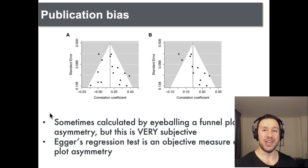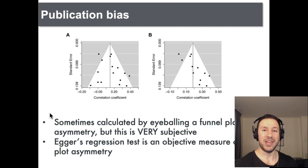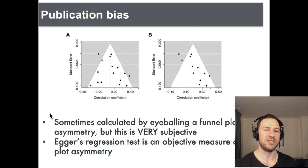On the left we have a funnel plot which typically would be seen as symmetrical, and on the right we would see a funnel plot which is not symmetrical. In many studies, you would actually see a lack of publication bias confirmed only because of a visual inspection of these funnel plots.